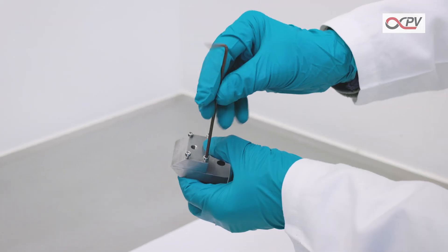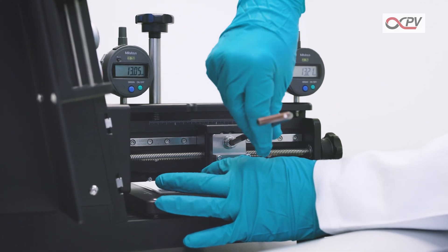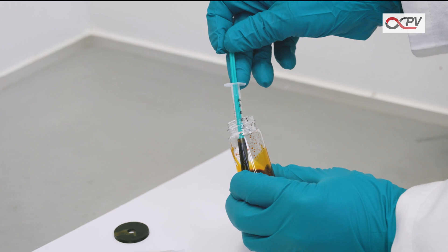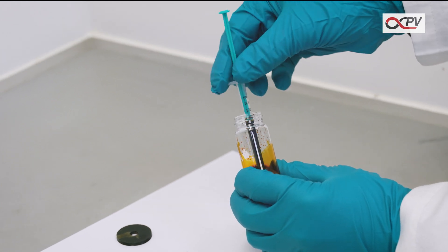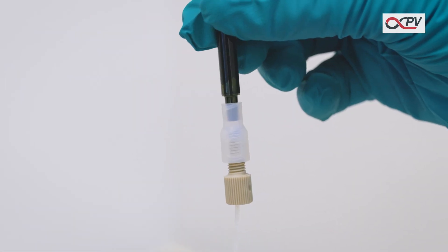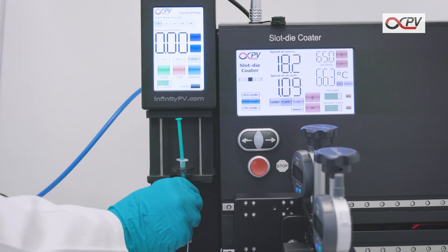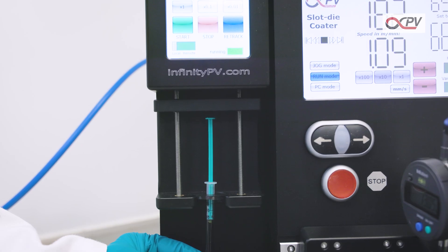Assemble the Slot Dye Head and mount it on the Slot Dye Coater. Subtract the active ink using a syringe. Attach the fitting kit to the syringe and connect it to the Slot Dye Head. Attach the syringe to the pump and make sure it sits tight.